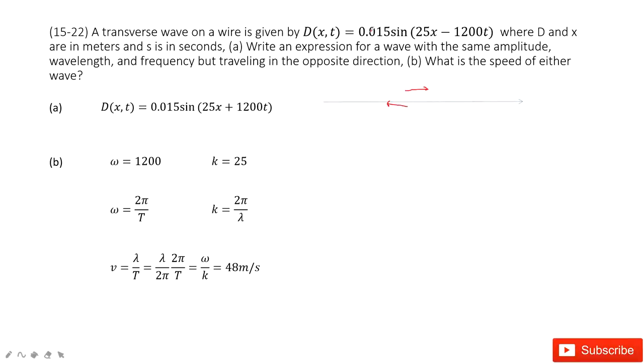So in this case, the amplitude will not change. The angular velocity will not change and the wave number will not change. The only thing that changes is direction. So we can replace the t as negative t. So replace t as negative t, the function becomes this one. It works, right?